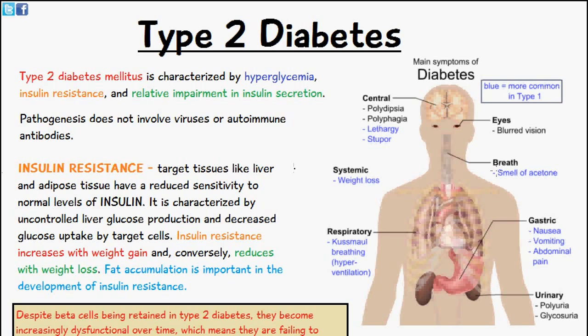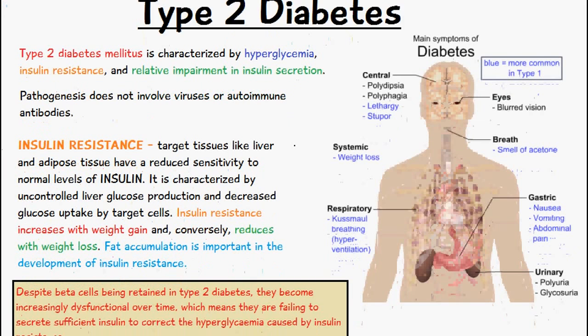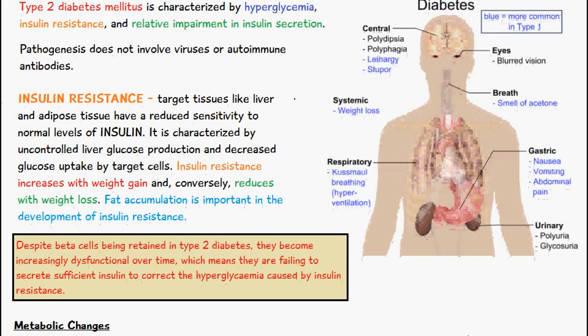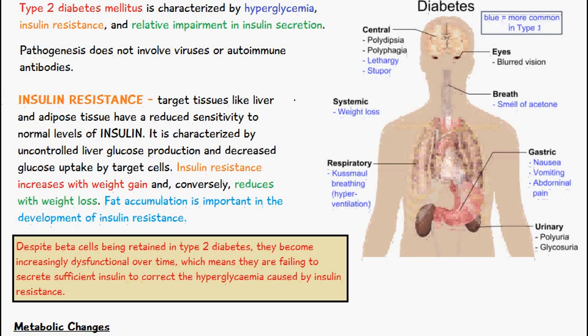The pathogenesis or cause of type 2 diabetes doesn't depend on viruses or autoimmune antibodies as it does in type 1 diabetes. Instead, type 2 diabetes is caused by insulin resistance which has negative effects on the body over a period of time. Insulin resistance is where target tissues like the liver and adipose tissue have a reduced sensitivity to normal levels of insulin, and it's characterized by uncontrolled liver glucose production and decreased glucose uptake by the cells.